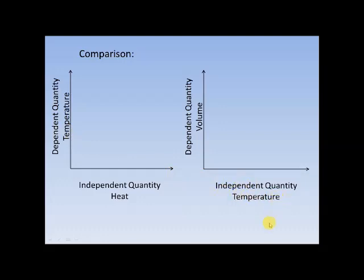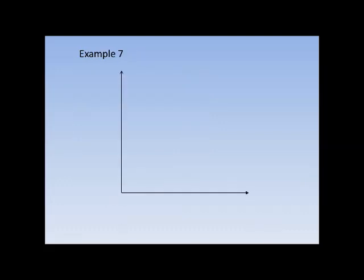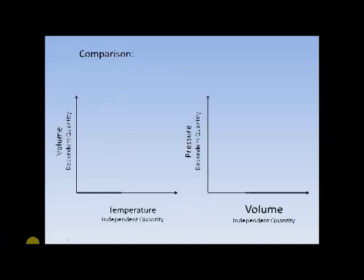Or, take for example a graph between pressure of a gas as its volume changes. If we increase the volume available to a fixed mass of gas, keeping the temperature constant, then the pressure of the gas would reduce. Thus, volume here is the independent quantity, while pressure the dependent quantity. We therefore plot volume along the x-axis and pressure along the y-axis. Now, compare this to the previous example. Here, volume is independent, while in the previous one, volume was dependent.